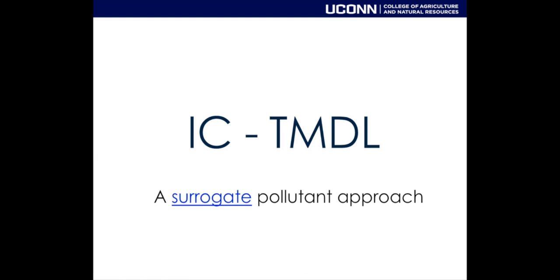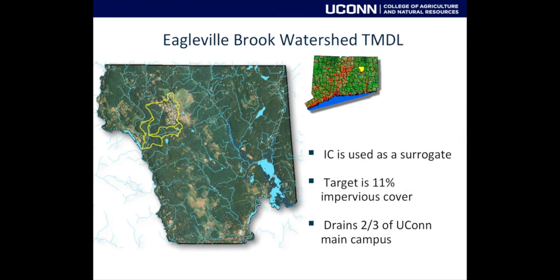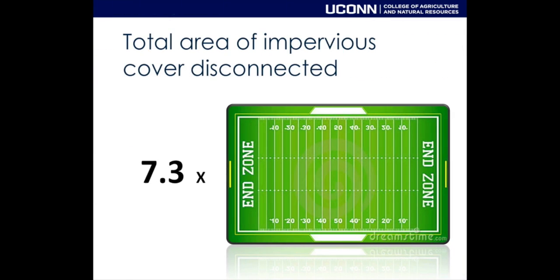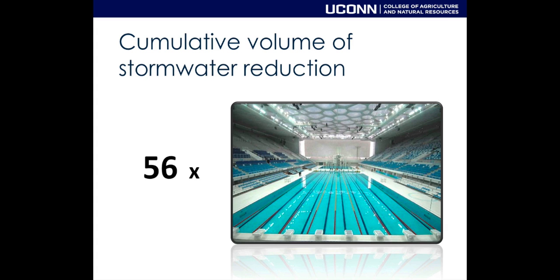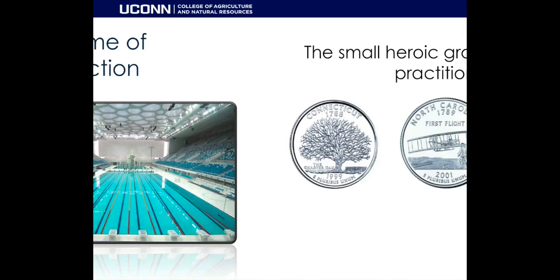Based on that finding, they created the IC TMDL. It's a surrogate pollutant approach — impervious cover is not a pollutant in itself, but it's a great indicator of the complex series of things that happens when you urbanize. They applied it to Eagleville Brook. Over the last five years or so, we've disconnected about seven football fields worth of impervious cover and kept about 56 Olympic pools of stormwater out of Eagleville Brook — so it's been successful so far.